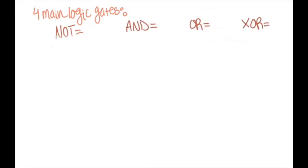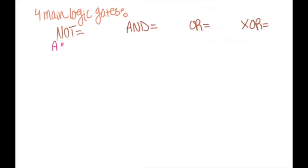There are four main types of gates: NOT, AND, OR, and XOR. But what does each gate actually do? A NOT gate will invert or flip any input. If the input is a one, then it will output a zero, and vice versa.